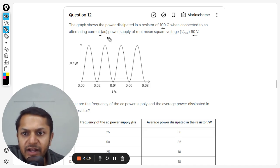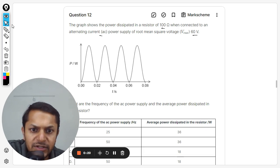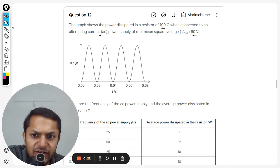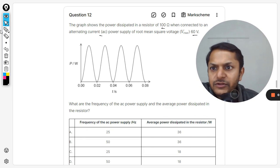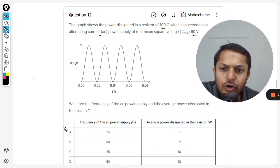And the graph is in front of you. What are the frequency of AC power supply and the average power dissipated in the resistor? Just a moment, the question was not that very visible.